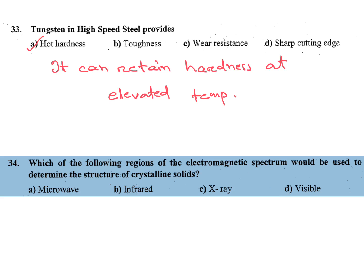Next: which of the following regions of the electromagnetic spectrum would be used to determine the structure of crystalline solids? A) microwave, B) infrared, C) X-ray, D) visible. The answer is X-ray.